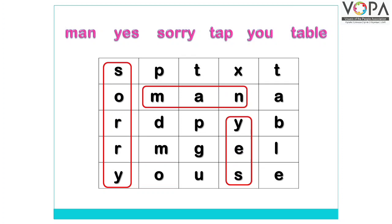उसके बाद word है Tap — T-A-P। देखो बच्चों, अगर आप देखोगे तो आपके सीधे हाथ तरफ T-A-B है, लेकिन Tap और Tab में फर्क है — हमें P वाला Tap तलाश करना है। तो वह word हमें मिला यहाँ पर T-A-P, Tap। अगला word है You।